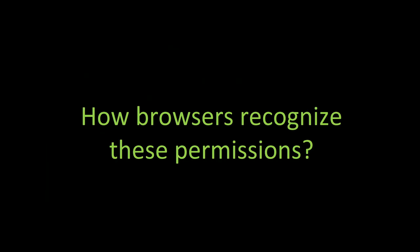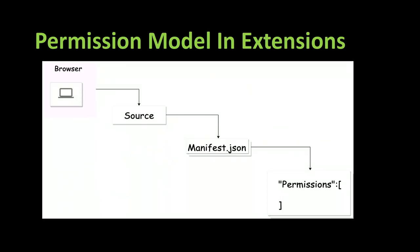You might ask how browsers recognize these permissions — like, an extension is able to do so many things in my browser, but where are these permissions coming from? Here's the permission model in browser extensions. Under the source of every extension, we have a file called manifest.json. Inside a manifest.json file, we have a permission array.